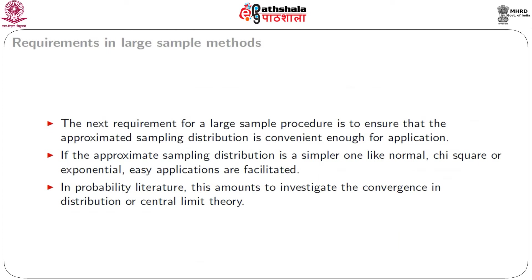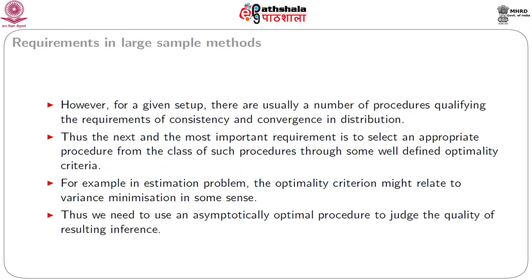The next requirement for a large sample procedure is to ensure that the approximated sampling distribution is convenient enough for application. If the approximate distribution is a simpler one like normal, chi-square, or exponential, easy applications are facilitated. In probability literature, this amounts to investigating convergence in distribution, or central limit theory. However, for a given setup, there are usually a number of procedures qualifying the requirements of consistency and convergence in distribution. Thus, the next and most important requirement is to select an appropriate procedure from this class through some well-defined optimality criteria. For example, in an estimation problem, the optimality criterion might relate to variance minimization. Thus, we need to use an asymptotically optimal procedure to judge the quality of the resulting inference.